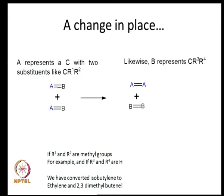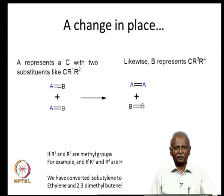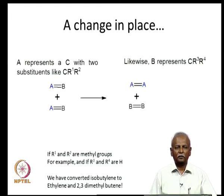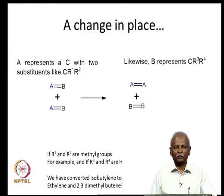In the slide before you, you will notice that 2 alkenes — the same alkene AB — which is basically indicative of 2 alkylidene groups joined together. If we do a metathesis of this AB olefin, then you can get both AA and BB. This allows for a change in the size of the olefin: if you take a small olefin and do metathesis, you can get a bigger olefin and a smaller olefin.